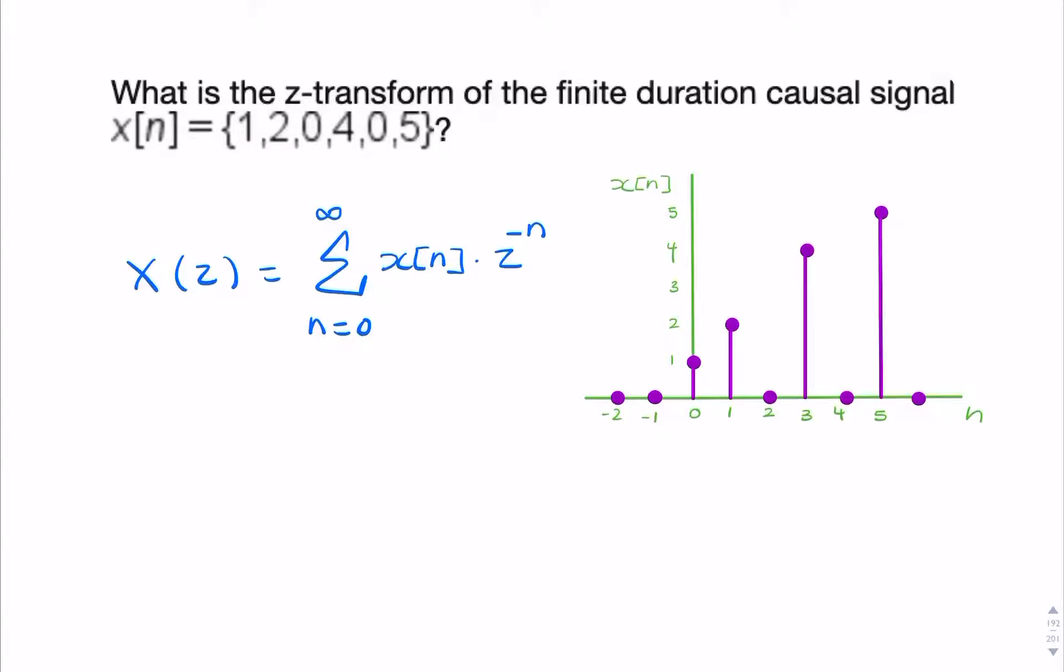So we can do that in one go. We can say it's 1 times z to the power 0, plus 2 times z to the minus 1, plus 0 times z to the minus 2, plus 4 times z to the minus 3, plus 0 times z to the minus 4, plus 5 times z to the minus 5. So I've simply taken these samples from the sequence, which I've illustrated